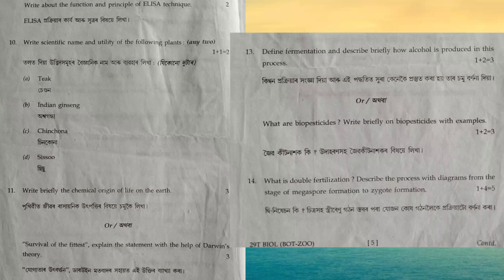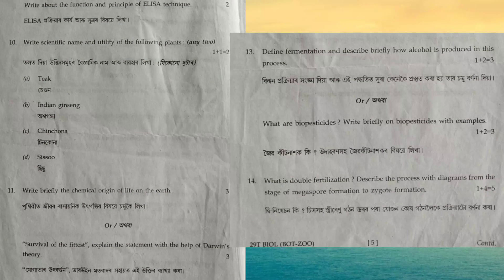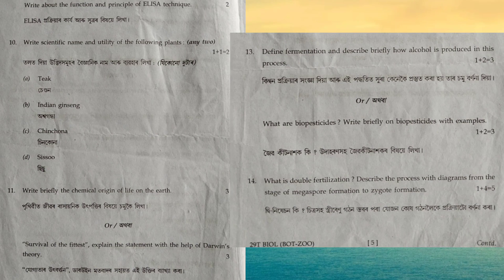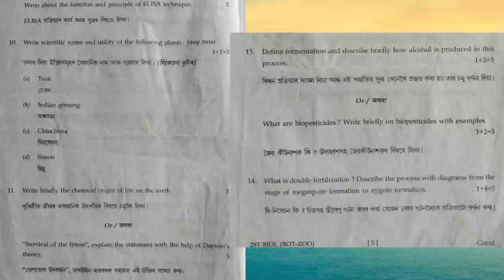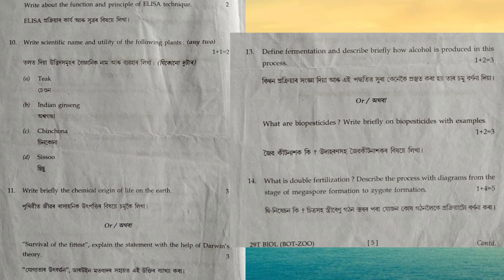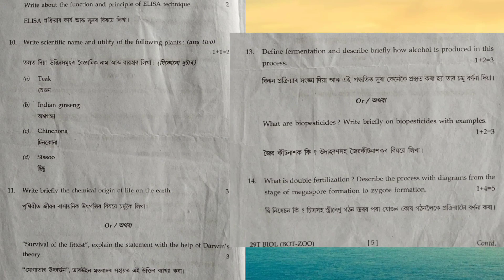Next question: define fermentation and describe briefly how alcohol is produced. Fermentation is a metabolic process in which enzymes oxidize organic substances to produce organic acids and ethyl alcohol. For the production of ethyl alcohol, a specific strain of yeast called Saccharomyces cerevisiae is used. This yeast produces enzymes that digest the carbohydrate content of sugary substances and produce ethyl alcohol. You also need to mention the steps of ethyl alcohol production with a diagram.